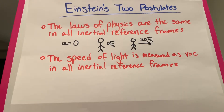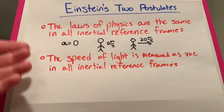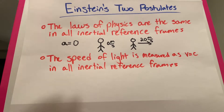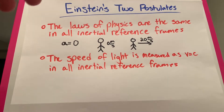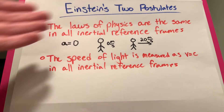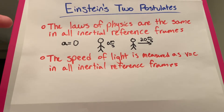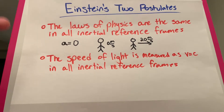An inertial reference frame is just a frame of reference or point of view where the observer is not accelerating. This could be someone who is standing still, or someone who is running to the right at 20 meters per second. Both of these individuals are in different inertial reference frames, but even so, the laws of physics are exactly the same in each. The second postulate is that the speed of light is measured as c, 2.998 times 10 to the 8 meters per second, in all inertial reference frames. This one is really important, as we're about to see when I cover time dilation.